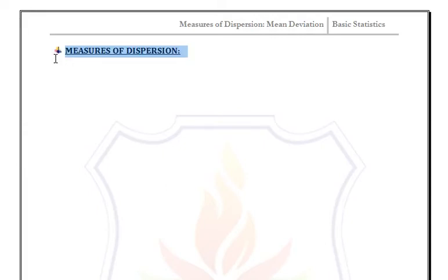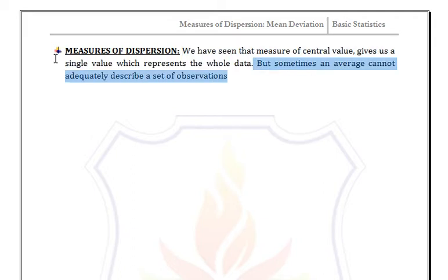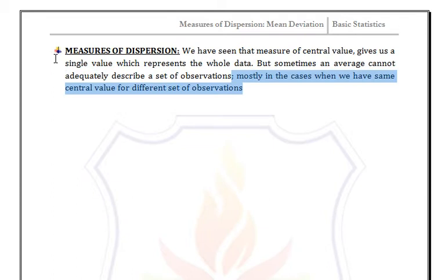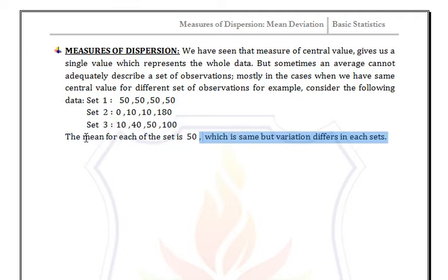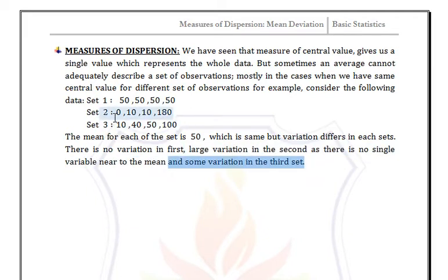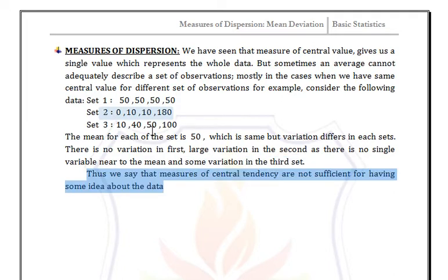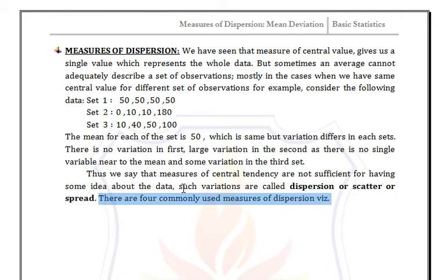In this video we discuss measures of dispersion. We already saw that a measure of central value gives a single value which represents all the data, but sometimes an average cannot adequately describe a set of observations, mostly in the case when we have the same central value for different sets of observations. Such variance are called dispersion.